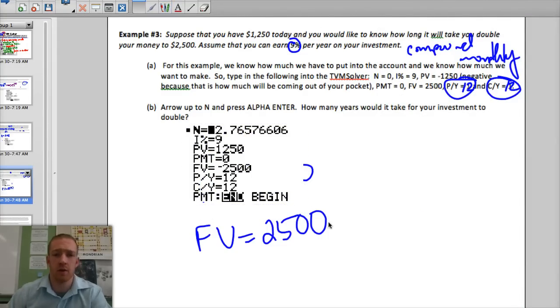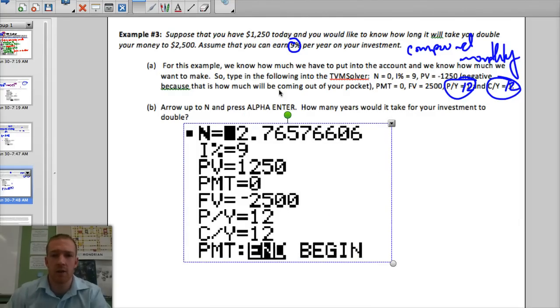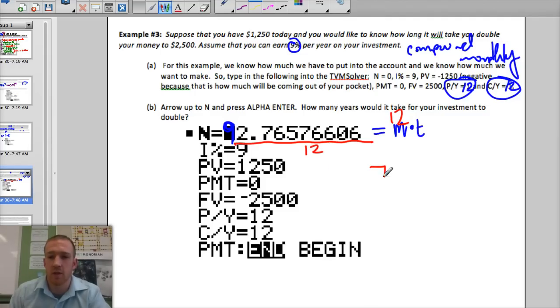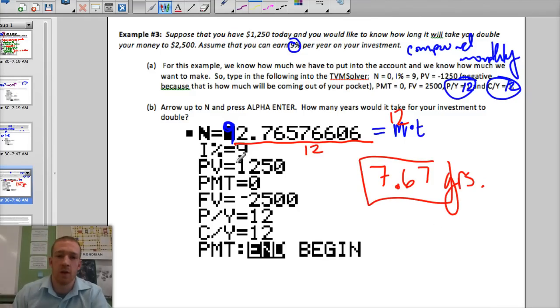It's not going to take 92 years. Because remember, the 92 represents... That's 92 equals the number of payments per year times number of years. And this was a 12. So what we have to do is divide this by number of payments per year. And that gives us 7.66 or 7.67. So that's how many years it's going to take for us to invest $1,250 at 9% growth compounded 12 times a year to get to 2,500.